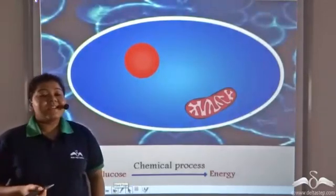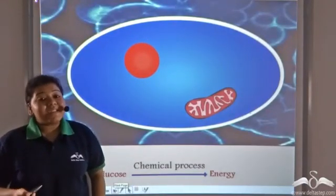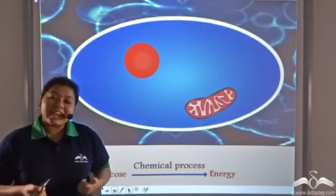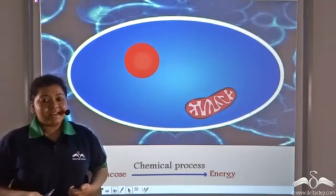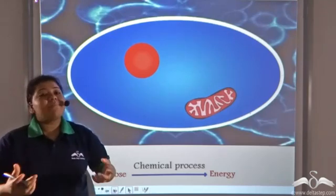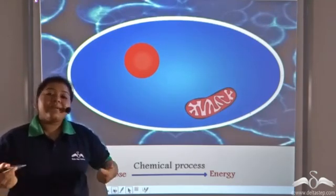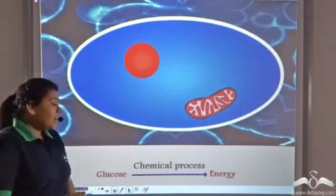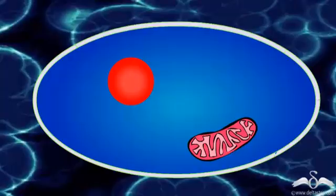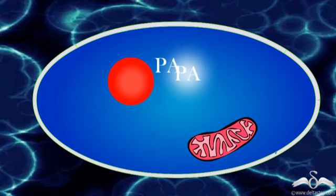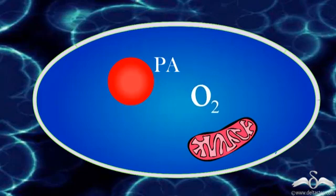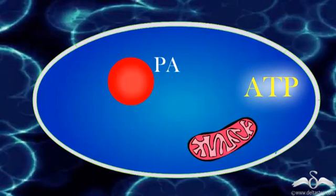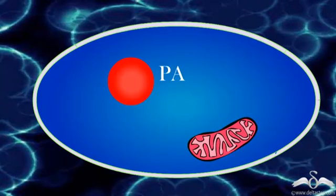When a person does any kind of activity, what happens at the cellular level? Glucose breaks down to form energy in the form of ATP. This ATP is taken up by the cells so that they can perform their function, and there is also heat generation. This chemical process that takes place in the cells is known as cellular respiration, where glucose breaks down to form ATP, which is utilized by the cells, and heat is also generated.